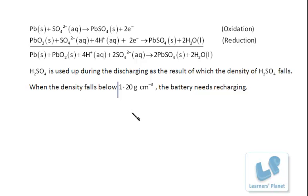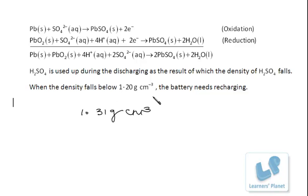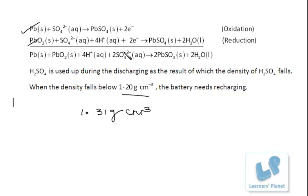H2SO4 is the electrolyte and it is used up during discharging. The initial density is 1.31 g/cm³. After discharging, the density falls below 1.20 g/cm³. When the density falls below 1.20, the battery needs recharging — that is, current must be supplied to the battery. Students should remember these reactions as they are very important.